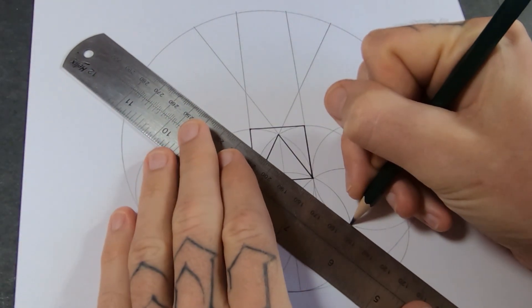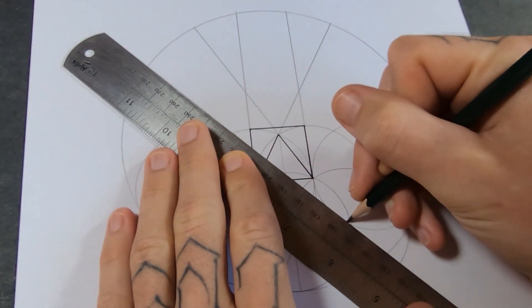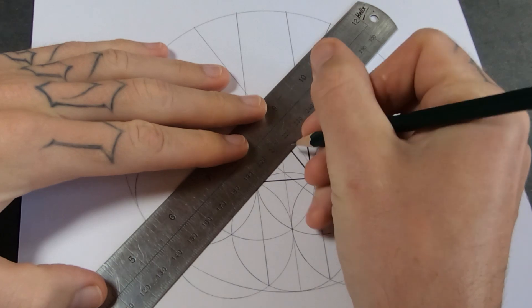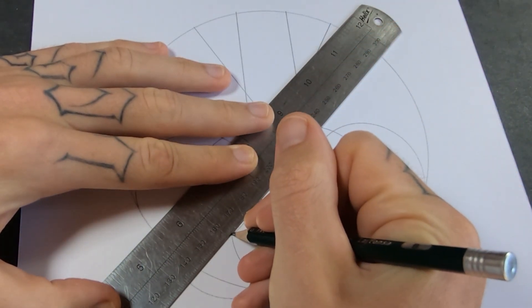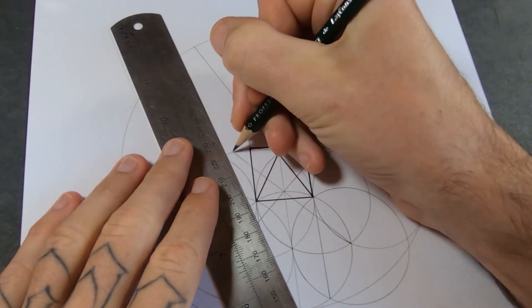I'll use these points on the left and right of the bottom circle, connect them to the top point of the same circle and project them. Then I can use those intersections to make the sides of the pentagon.